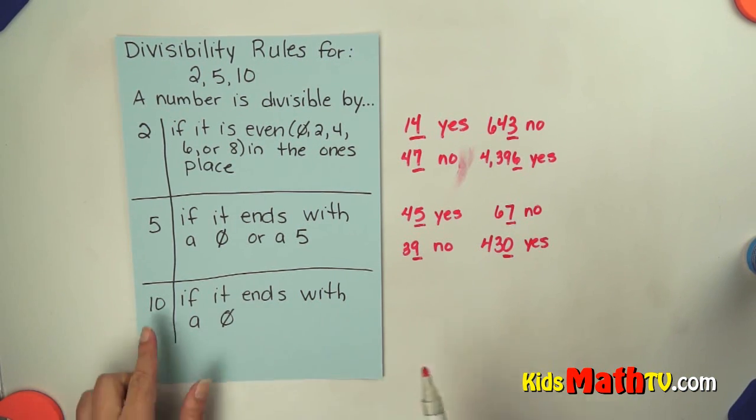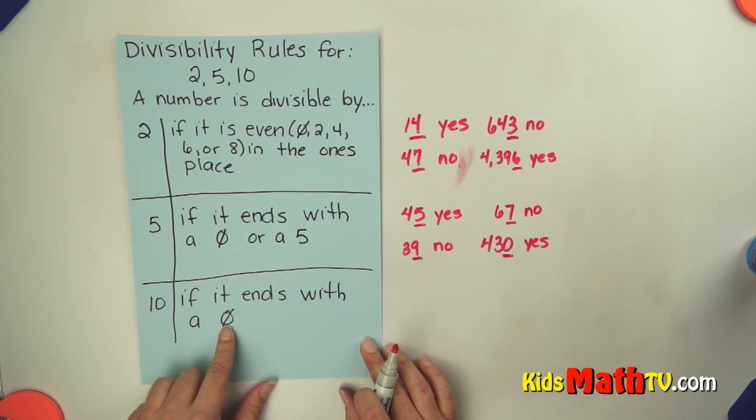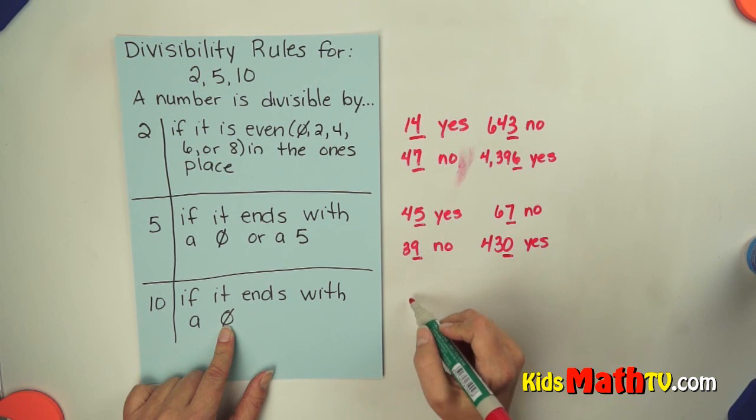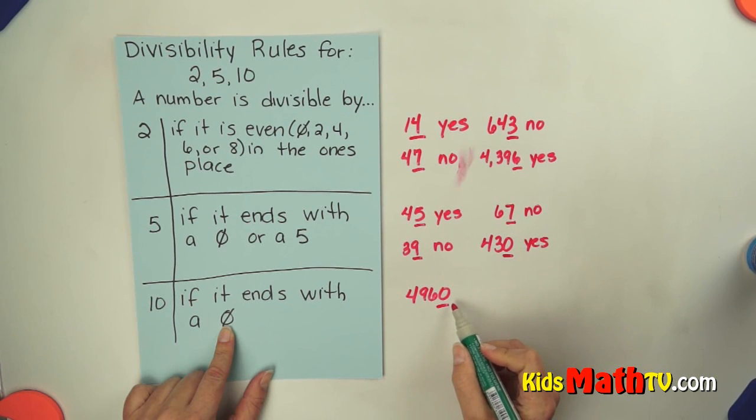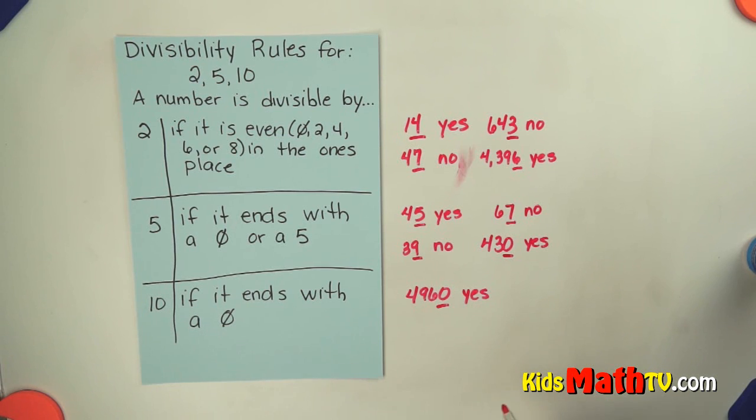And the rule for 10 is even easier. If the number ends with a 0, it's divisible by 10. So 4960, all I look at is the last number. It is a 0, so yes, I can divide 4960 by 10 and it will come out evenly.